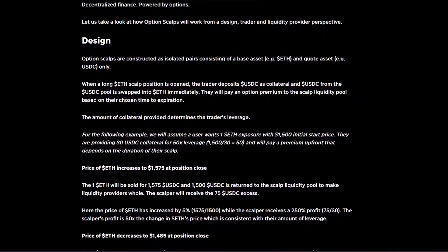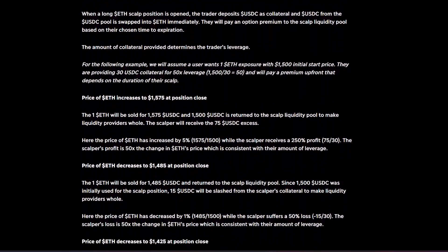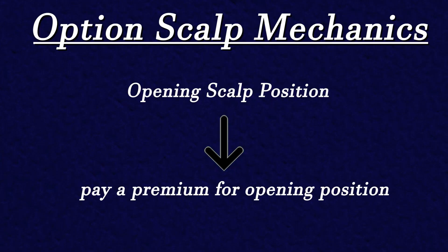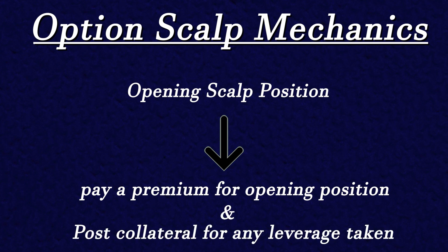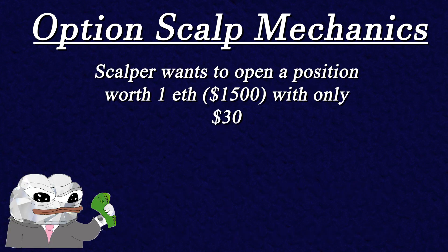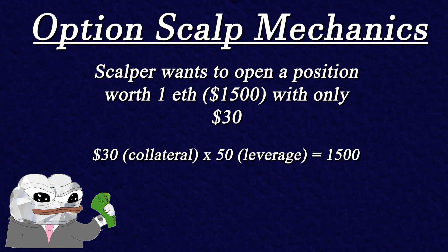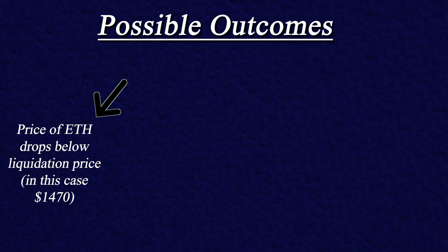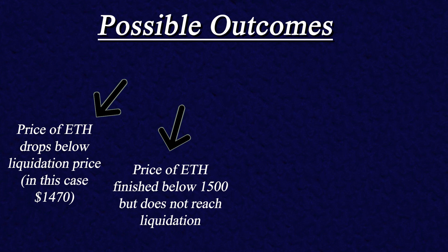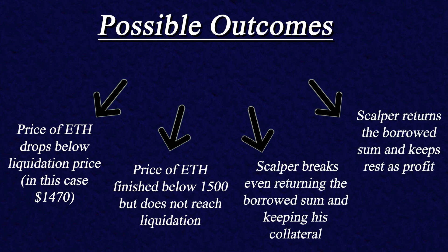We can better illustrate this through the example given in the DOPEX article explaining the design. When opening a scalp position, the scalper must initially pay a premium depending on the time frame of his trade, and then post collateral if he chooses to take leverage. Assuming the scalper would want to take up a position of 1 ETH worth $1,500 with only $30 of collateral, he would need to leverage up by 50x. The scalper would then be exposed to a few different possibilities based on how the price of ETH changes. The worst case scenario would be for the price of ETH to drop below his liquidation price. Compensation for liquidity providers using the scalper's collateral would also occur if the price of ETH dropped under the initial $1,500 but did not reach liquidation price — in that scenario, the money needed to make liquidity providers whole would be slashed from the scalper's collateral. All other scenarios would see the scalper either break even or make profit, returning the initial borrowed sum back to the liquidity pool and keeping the rest as profit.